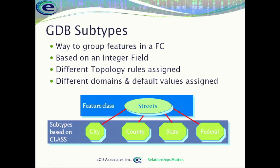With topologies, we can also assign different topology rules based on subtype. One rule is that roads must not intersect, meaning when they come to a crossing they must be broken. That's true for most city and county roads, but for state and federal roads we often have over and underpasses, so those roads could pass over one another without being broken. We might not want to apply that rule to state and federal roads, but we would apply it to city and county roads. Using subtypes allows us to do that, increasing the flexibility of our topology rules.